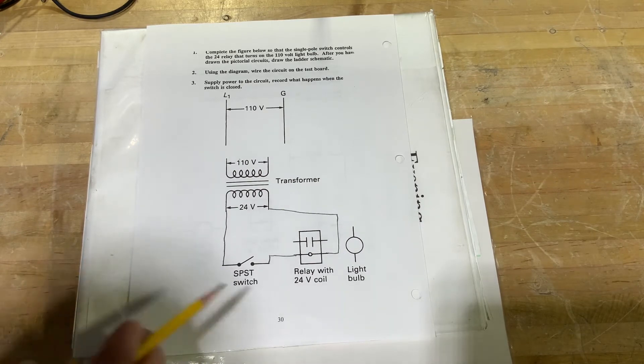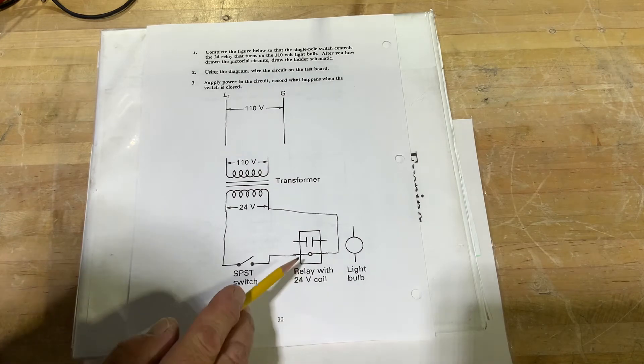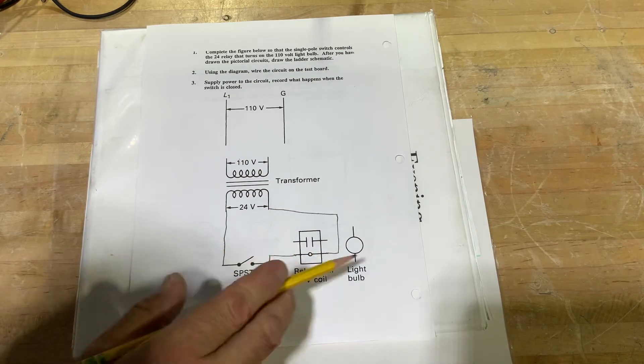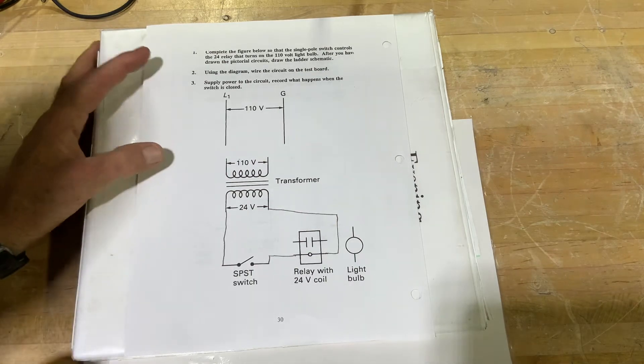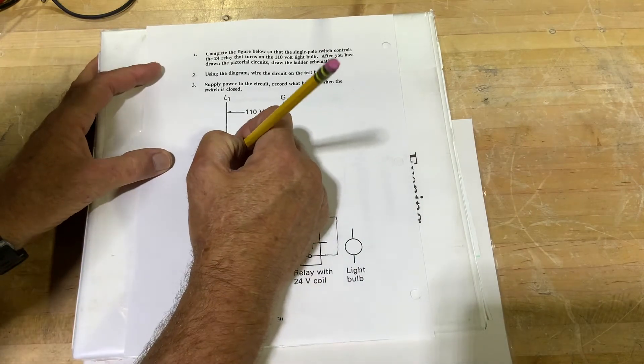If I pull that switch, turn that switch on, we're going to close that contacts. Now I'll show you how to wire in the power side of that bulb. First off, we have to power up our transformer.